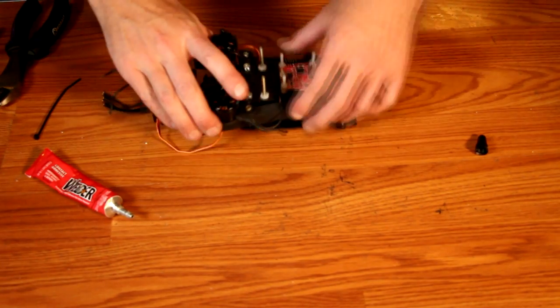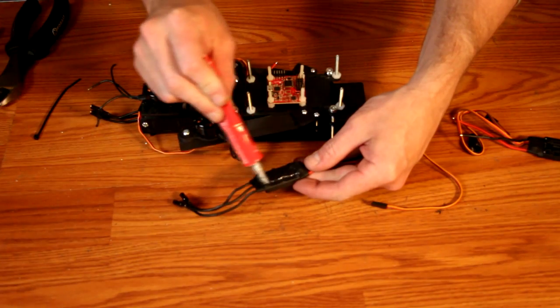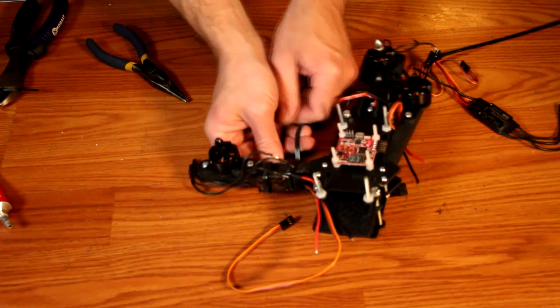I'll use this same technique for the front arm assembly. Again, a little bit of glue to hold it in place and then some zip ties wrapped around good and tight to keep it from moving.